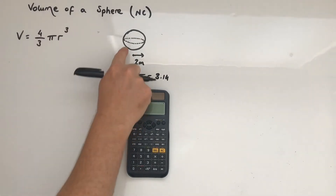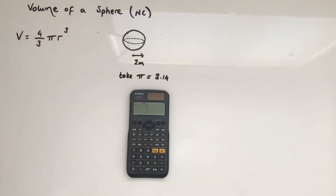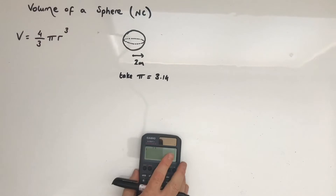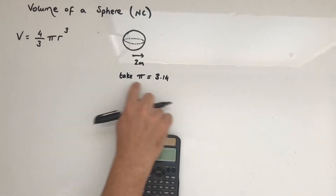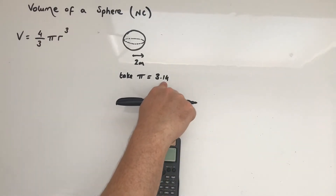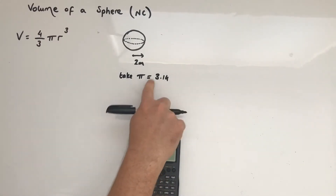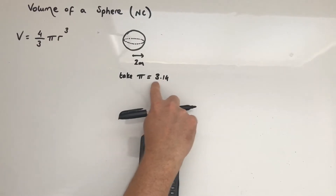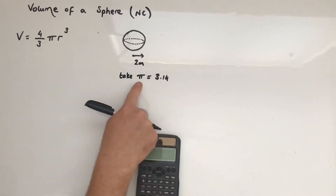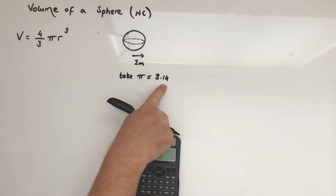We've got a sphere here with radius 2 metres. We're going to take pi as 3.14 — that's the guidance — so we're using pi rounded to the nearest hundredth.